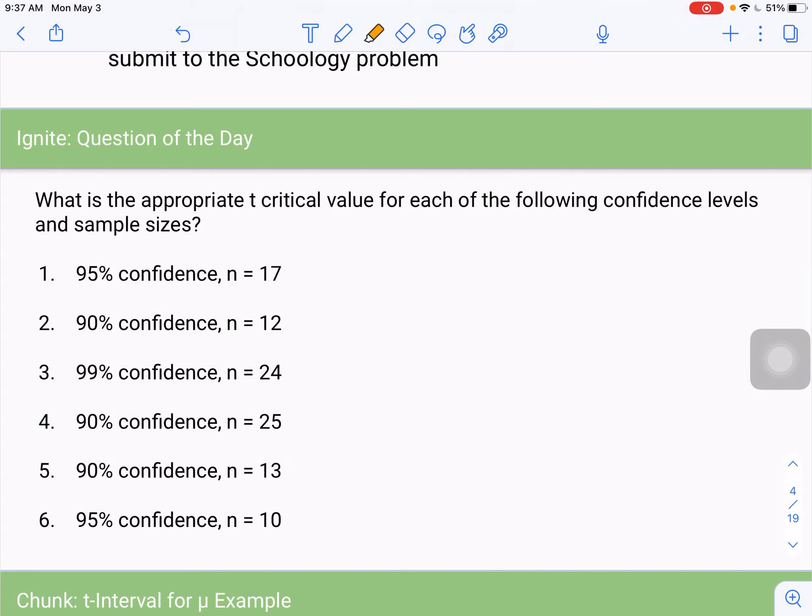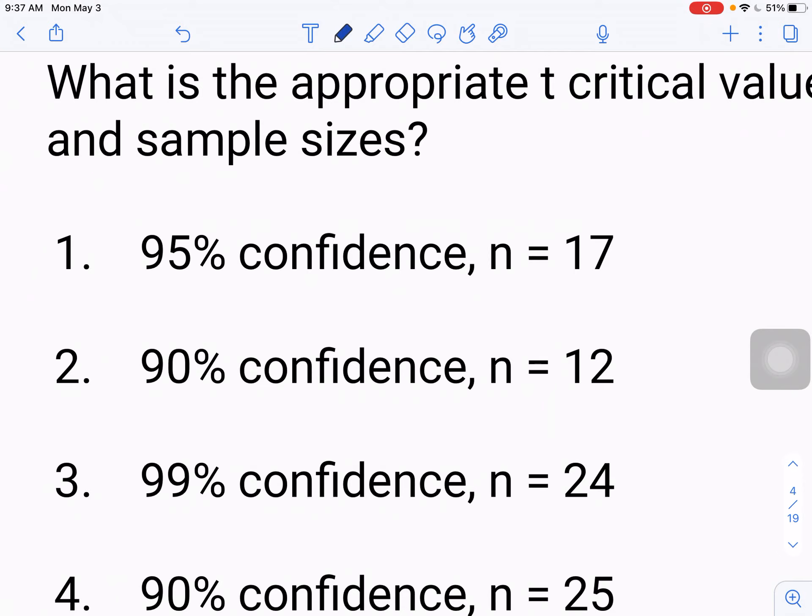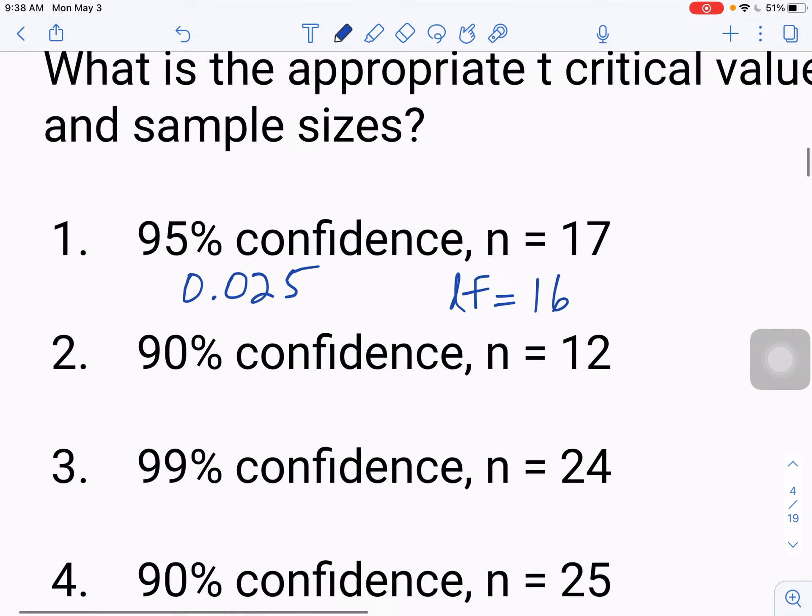The question says, what is the appropriate T-critical value for each of the following confidence levels and sample sizes? So I have six different combinations here of confidence levels and N values. So I would recommend using your calculator for this. So I'll go ahead, pause the video, do these six questions, and then tune back in, and I'll have some answers for you. All right, welcome back. So number one, so you're looking at 95% confidence with a sample size of 17.